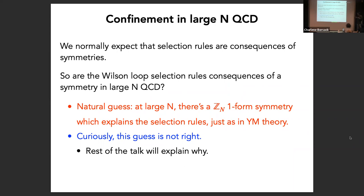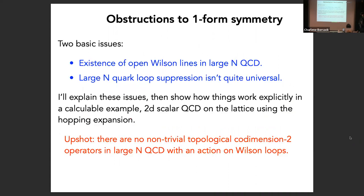The purpose of this talk and our paper is to give arguments why this scenario is not realized — it turns out to not be correct. I'll give some general arguments for obstructions to one-form symmetries in large N QCD, and then talk about the simplest possible example: 2D QCD with scalar fundamental matter on the lattice. There are two main obstructions. One is the existence of open Wilson lines in large N QCD, and the other is a failure of quark loop suppression — precisely for the operators which you would have thought would generate the symmetry.